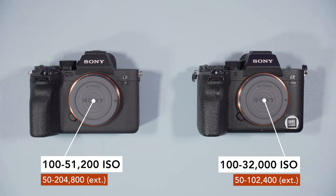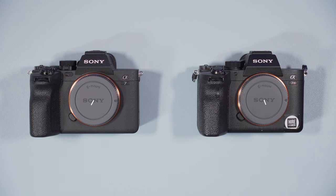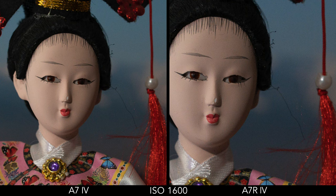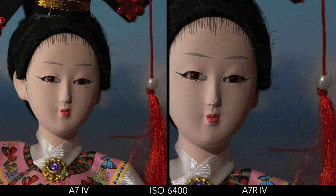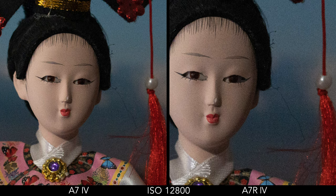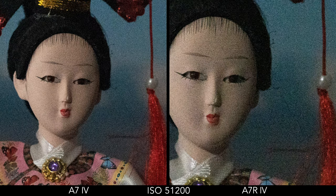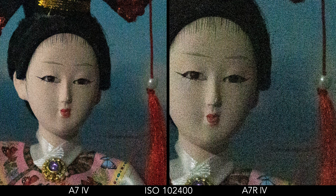The ISO range is wider on the a7 IV as you can see on screen. I was pleased to see how well the a7R IV can handle high ISO, despite having almost double the megapixels. Up to 12,800 the results are comparable. It's only from 25,600 that you start to see more noise on the R model, and the difference becomes greater from 51,200, where the a7R IV is already using the extended values. Needless to say, the highest ISO levels look pretty bad on both.